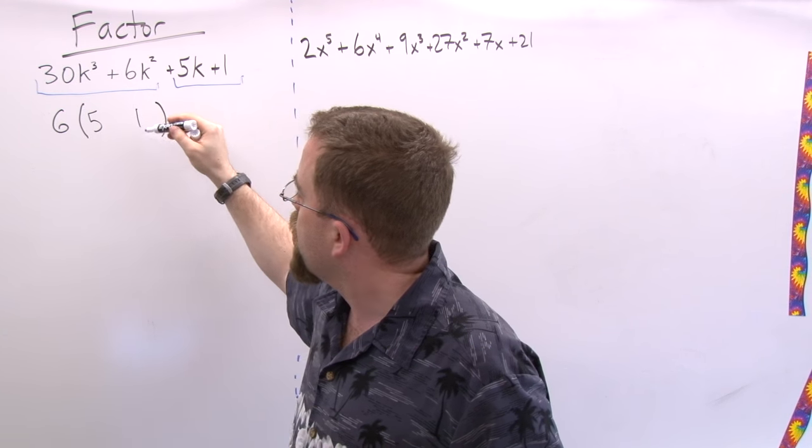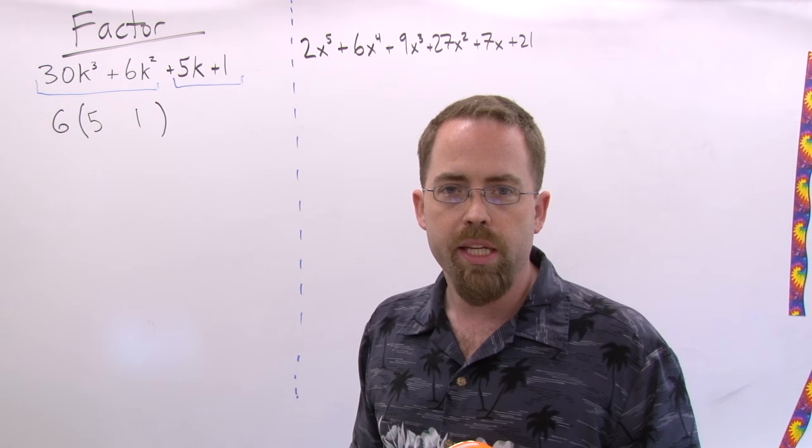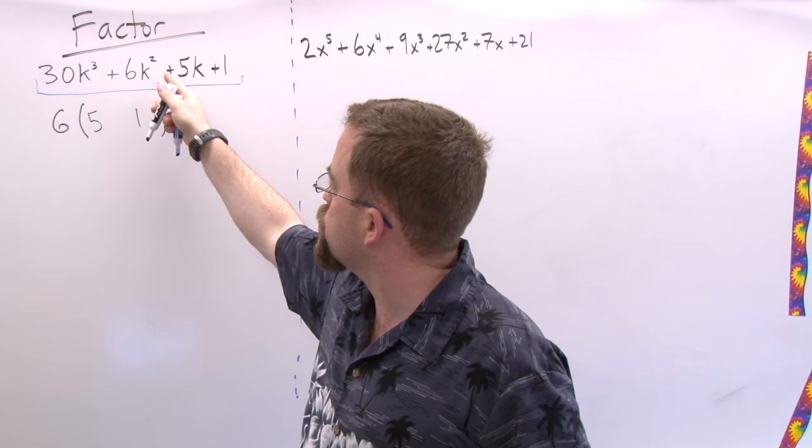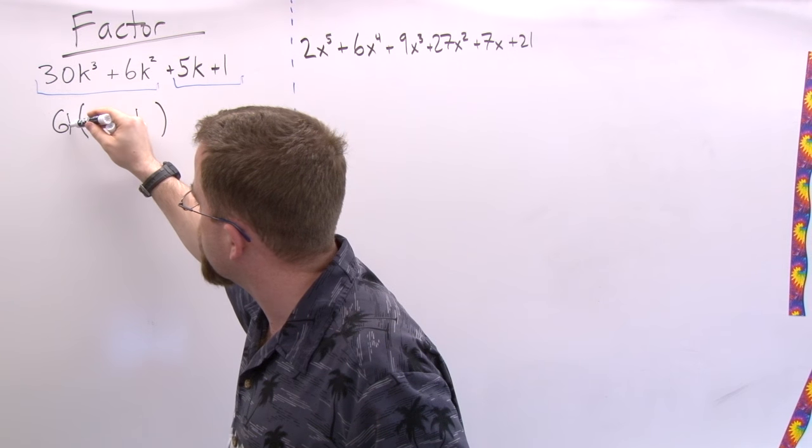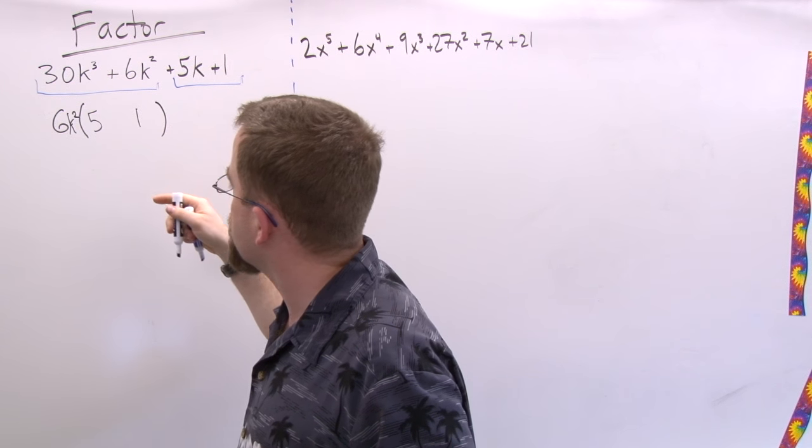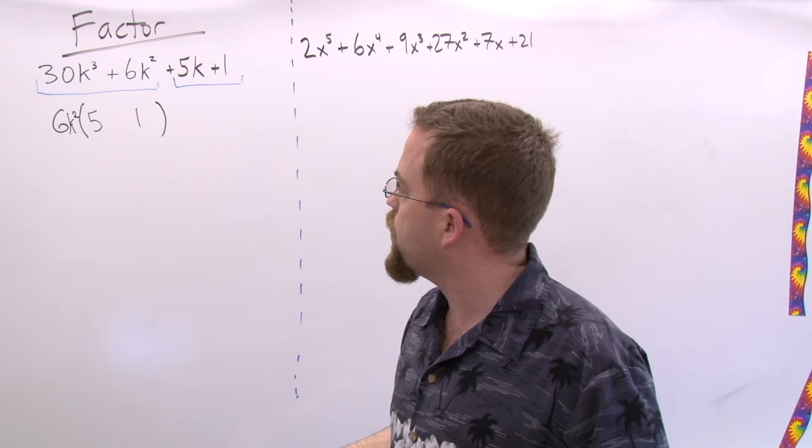And about K's, how many K's can I take out? Well they both have at least two because this one is K to the third and that one is K squared, so we can at least take out a K squared and that'll leave us with 5K plus 1.